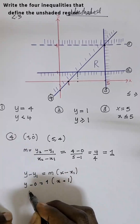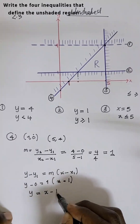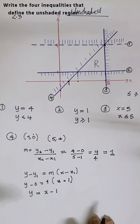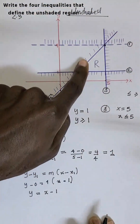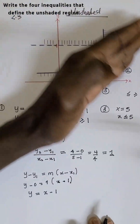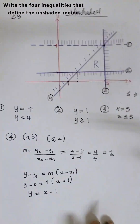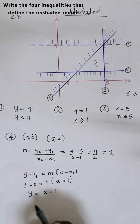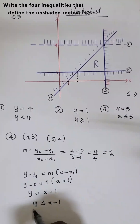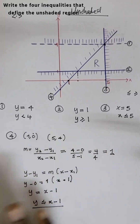Substituting: y minus zero equals one times open bracket x minus one. So y equals x minus one. Now, this is an inequality, not an equation. We are looking for the unshaded lower part, so it is less than or equal to. The line is not dotted, so the final inequality is y is less than or equal to x minus one.